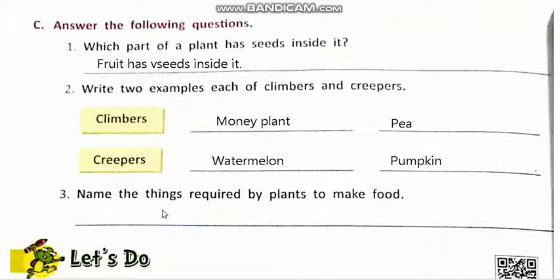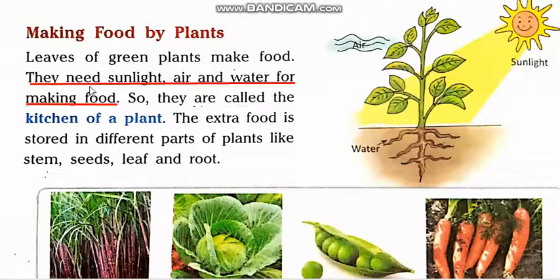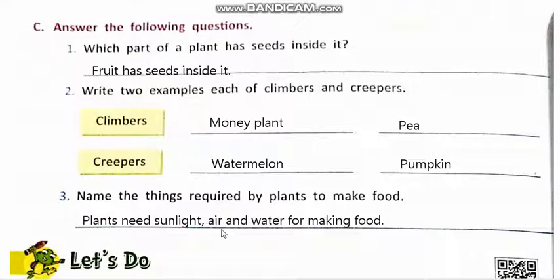The next question: Name the things required by plants to make food. They need sunlight, air and water for making food. Sunlight, surishki roshni, air and water for making food — food banane ke liye. Plants need sunlight, air and water for making food. Students, you will solve these exercises in your books and learn these questions.